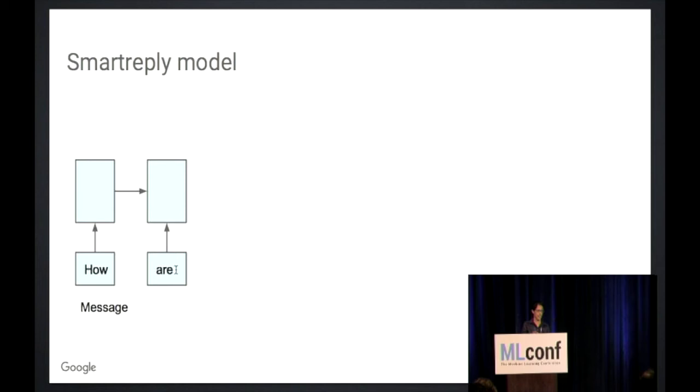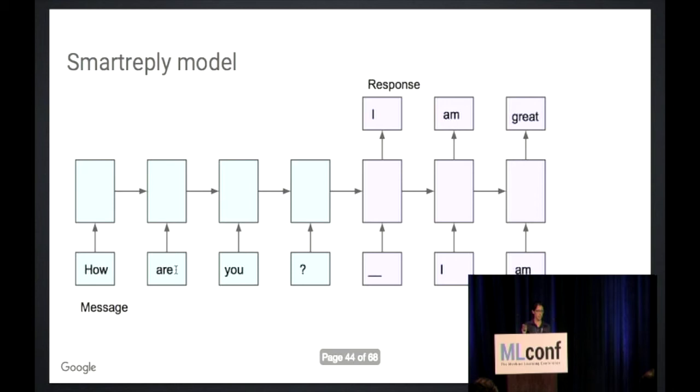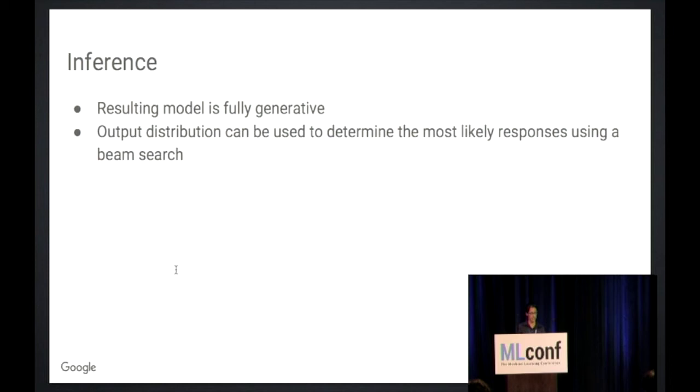Putting it all together, feed in the incoming message one token at a time, generate the outgoing message one token at a time. So the resulting model is fully generative. And like I said, we're just going to use the output distribution to approximate the most likely responses, typically in practice using a beam search.